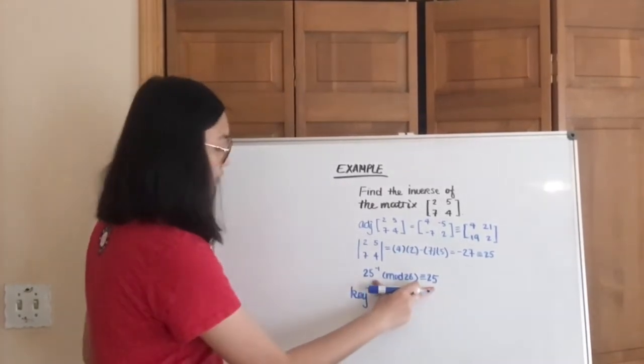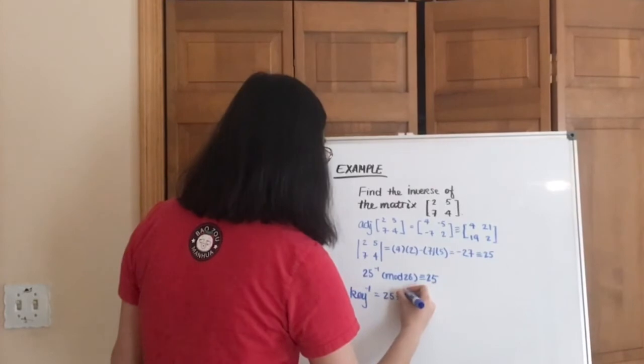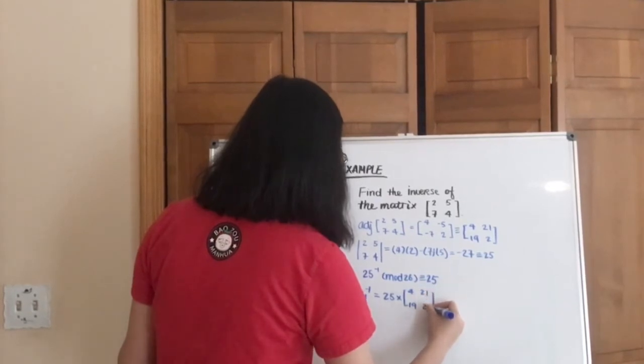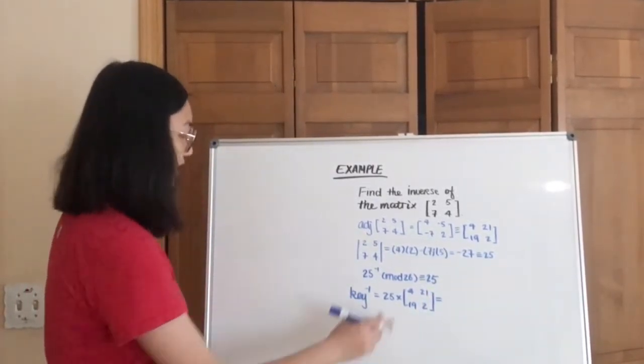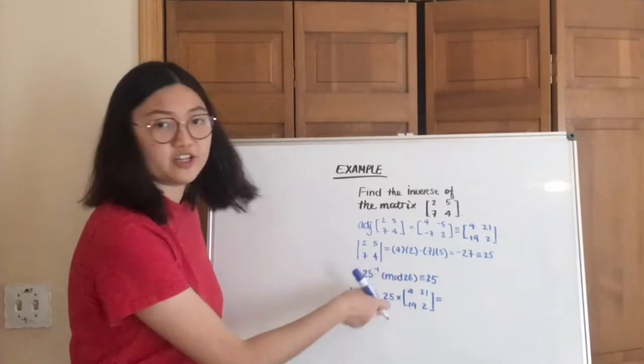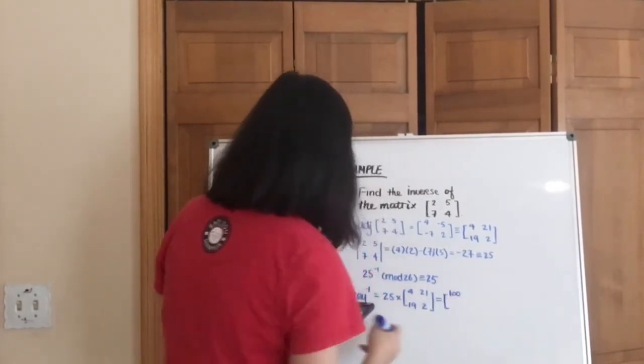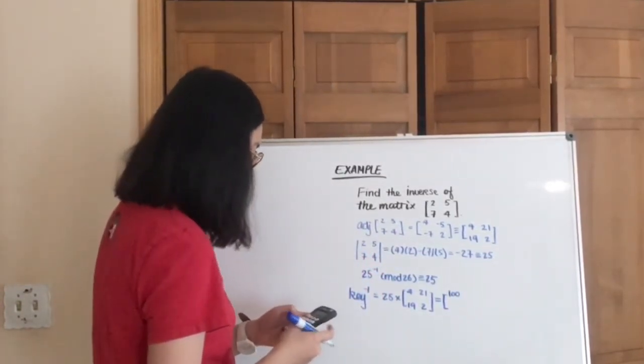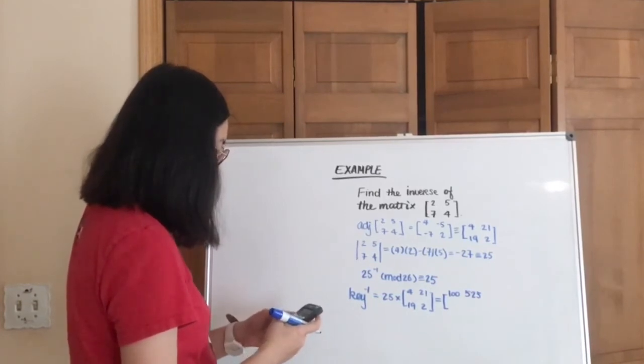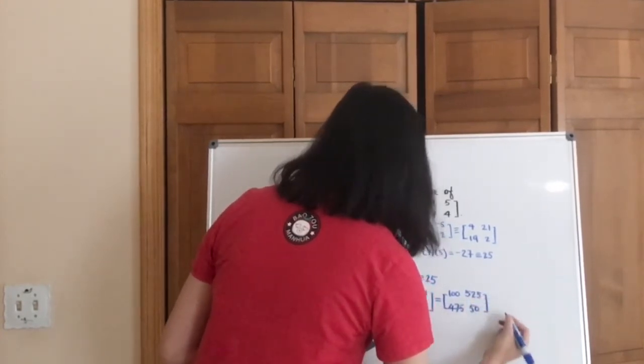We're going to multiply this 25. Note that this is the inverse of this value. So it's going to be 25 times [4, 21, 19, 2]. And if you know your matrix math, we know that if we multiply a matrix by a constant, we're just going to multiply every single number in this matrix by this constant. So that's going to give us 100, 525, 475, and 50.